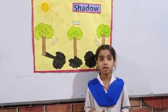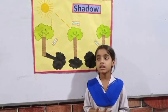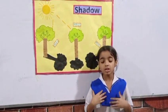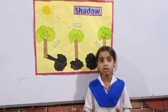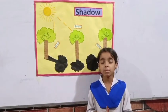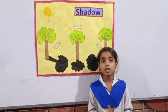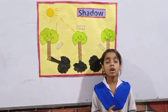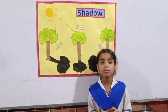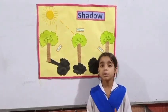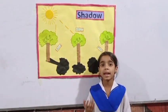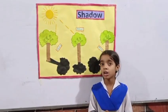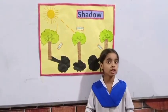Shadow is a dark structure. We have a black color shadow. It is a shadow — the shadow is formed by light. It is blocked by an object. The shadow is a dark structure. When the light is blocked, it is a shadow.